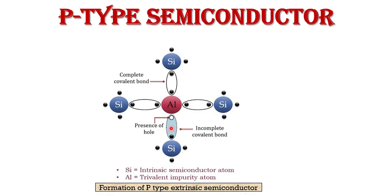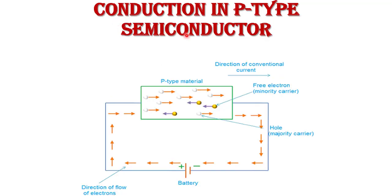In P-type semiconductor, there are a majority of holes compared to electrons. Regarding charge on P-type semiconductor: many people think that because P-type semiconductor has a large number of holes, its total electric charge is positive — but this assumption is wrong. Even though P-type semiconductor has a large number of holes, these holes are provided by trivalent atoms that are electrically neutral. Therefore, the total charge of a P-type semiconductor is also neutral.